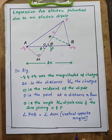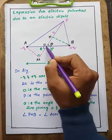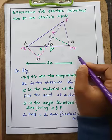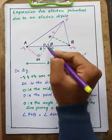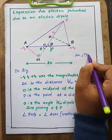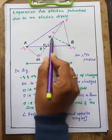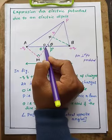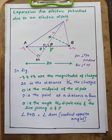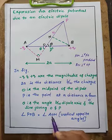Angles POB and AOM are vertically opposite angles. We draw AM perpendicular to PO produced, and BN perpendicular to OP. BN is 90 degrees to OP.